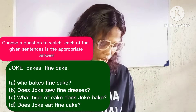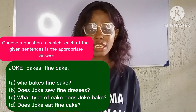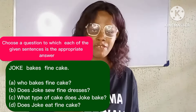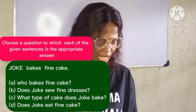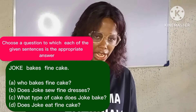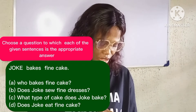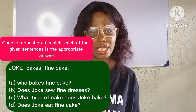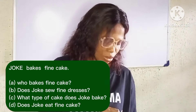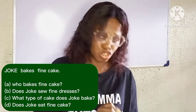Let's see the first question: 'JOKER bakes fine cake.' The emphasized word is 'Joker.' Now, option A is: 'Who bakes fine cake?' If I tell you Joker bakes fine cake and you ask me 'who bakes fine cake?', I will say JOKER — Joker bakes fine cake. I will emphasize Joker. For you to ask me who bakes fine cake, it means you did not get the name of the person that bakes fine cake. So option A is the correct answer because it makes me emphasize Joker.